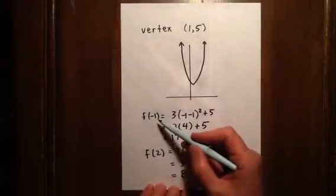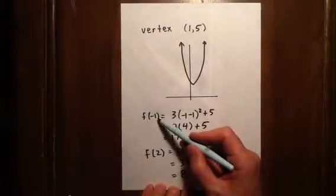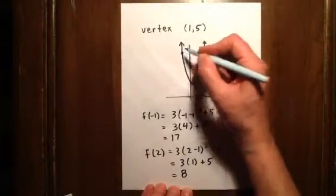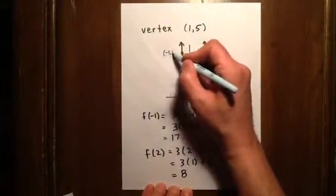We start with x equaling -1. When x is -1, y is 17. So we can imagine that point up here somewhere. That's the point (-1, 17).